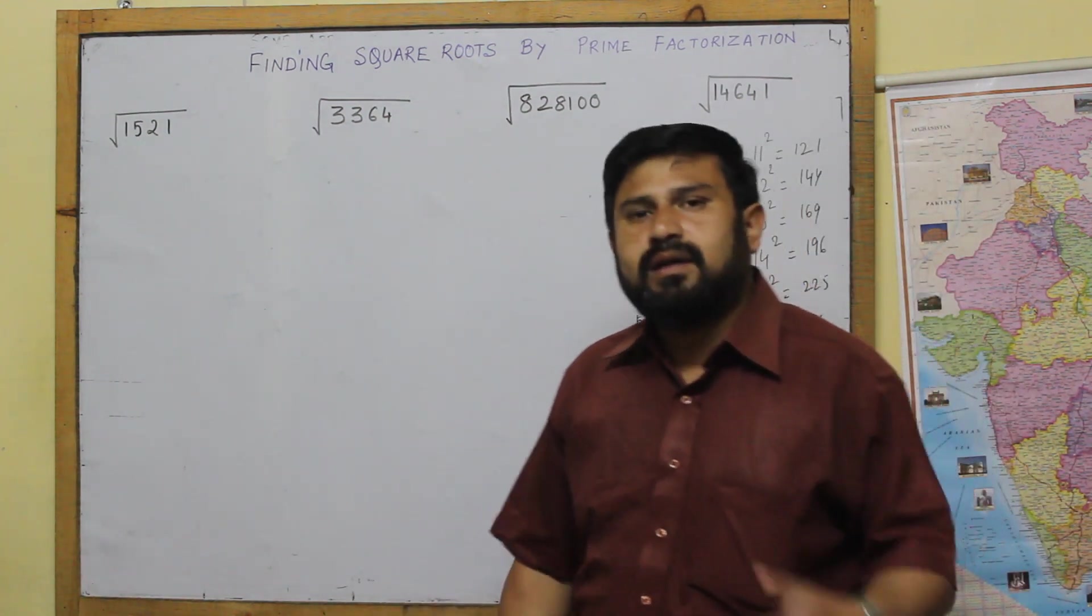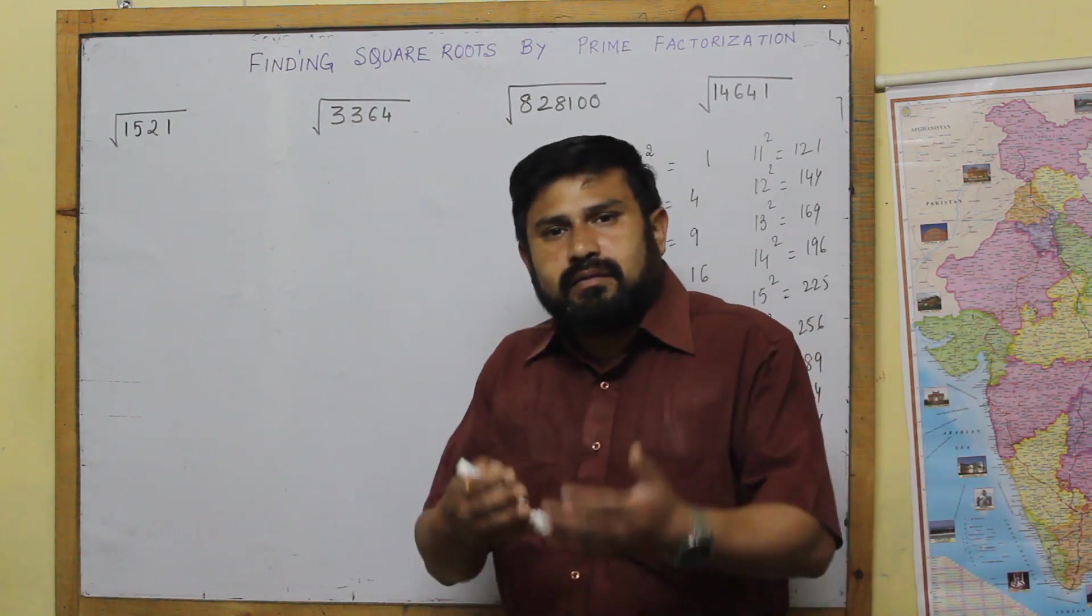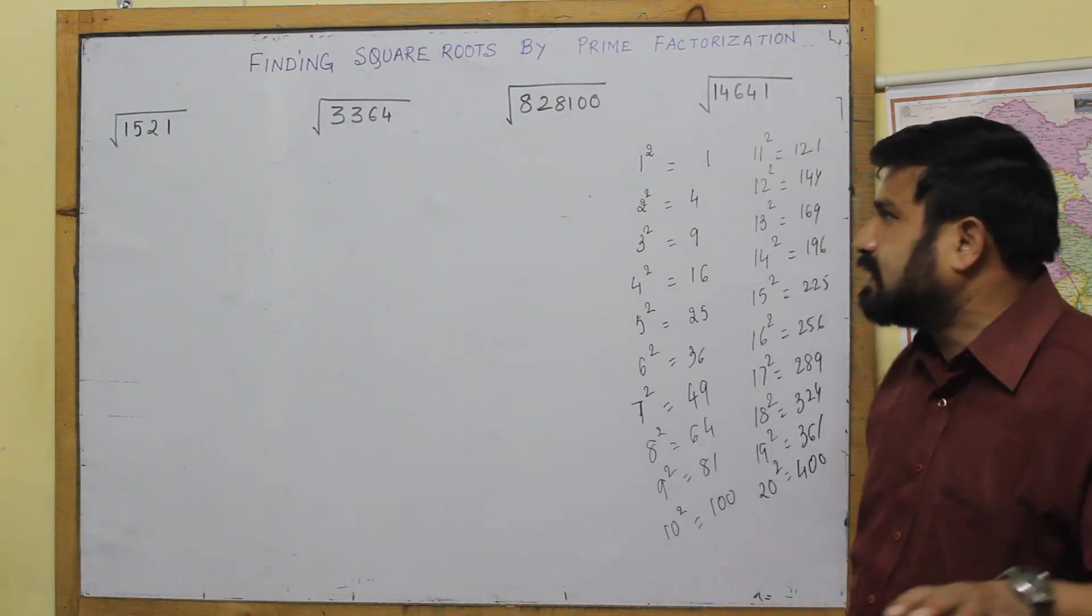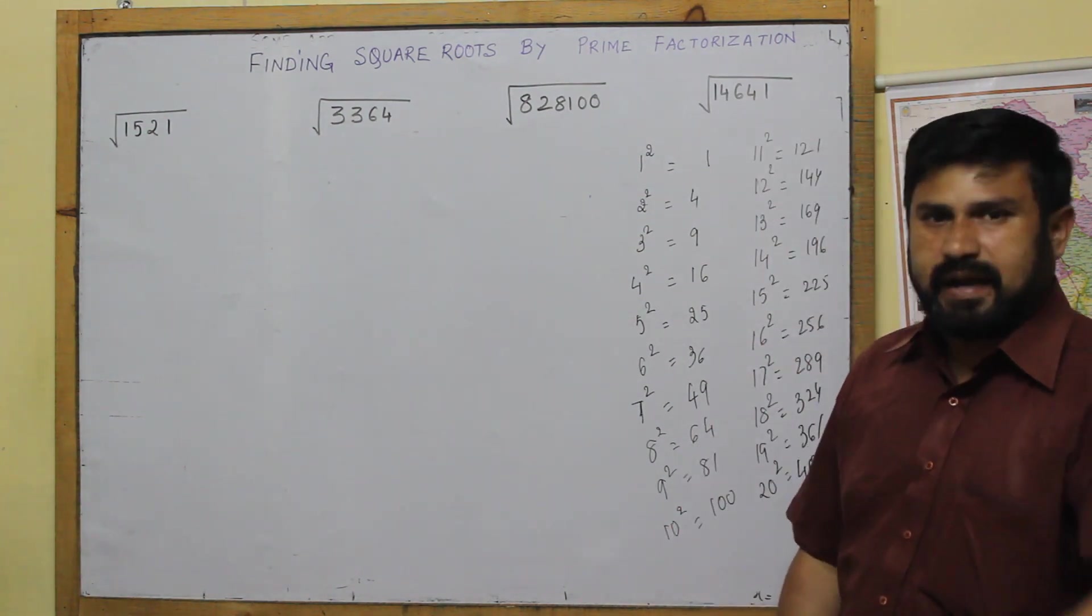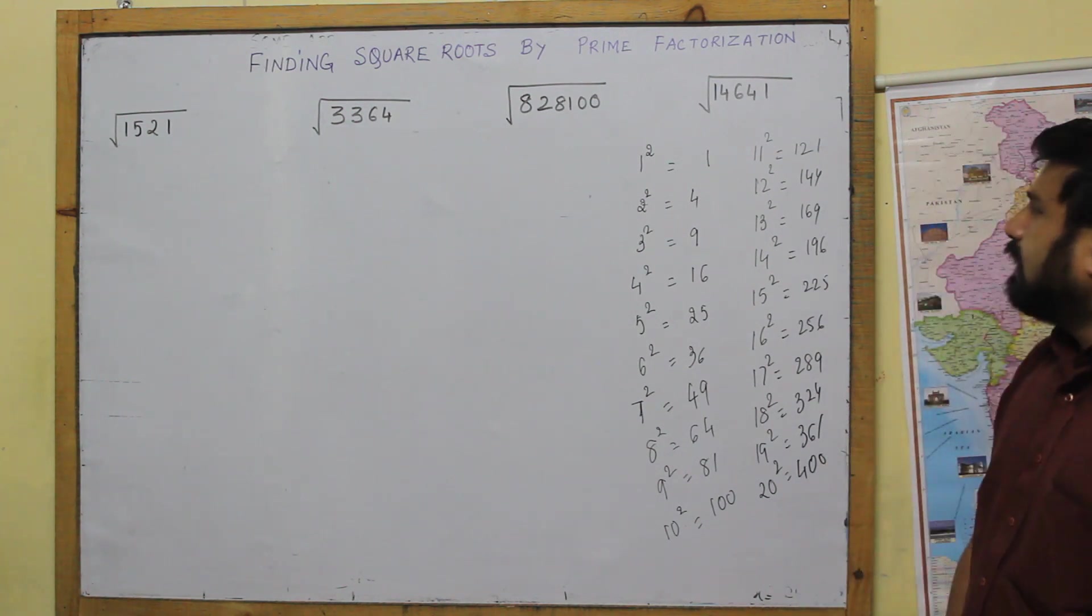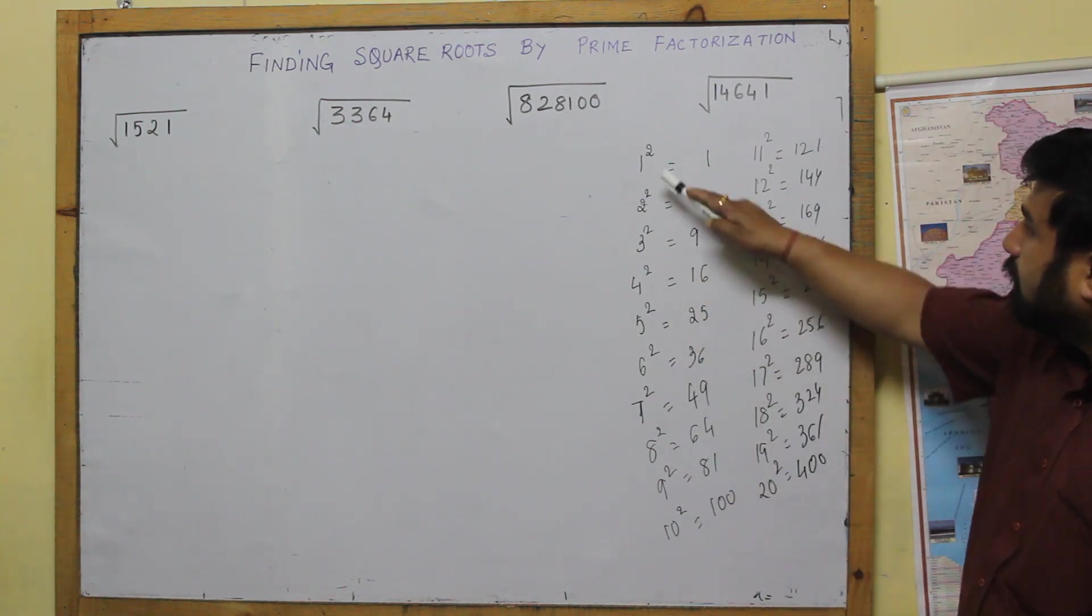In the smaller classes we have learned how to break the number and based on that we find out the number of factors. Now to understand the square root by prime factorization, one table is going to be always handy for us and that table will be this particular.